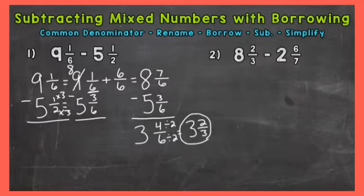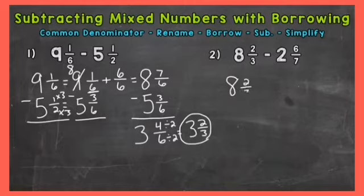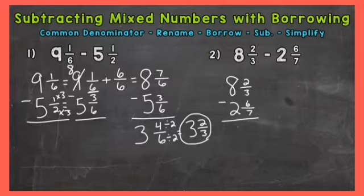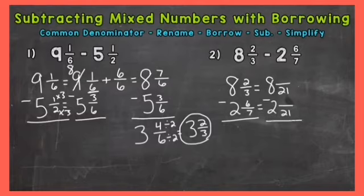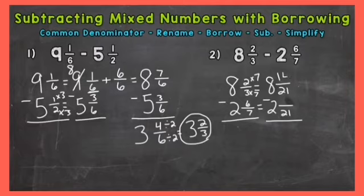So let's go on to number two, where we have eight and two-thirds minus two and six-sevenths. Let's line this up vertically: eight and two-thirds minus two and six-sevenths. Can we subtract those fractions? No, we need a common denominator. The least common denominator for three and seven is going to be twenty-one. So let's rename: eight and how many twenty-firsts minus two and how many twenty-firsts? Three times seven is twenty-one, so two times seven is fourteen. Seven times three is twenty-one, so six times three is eighteen.